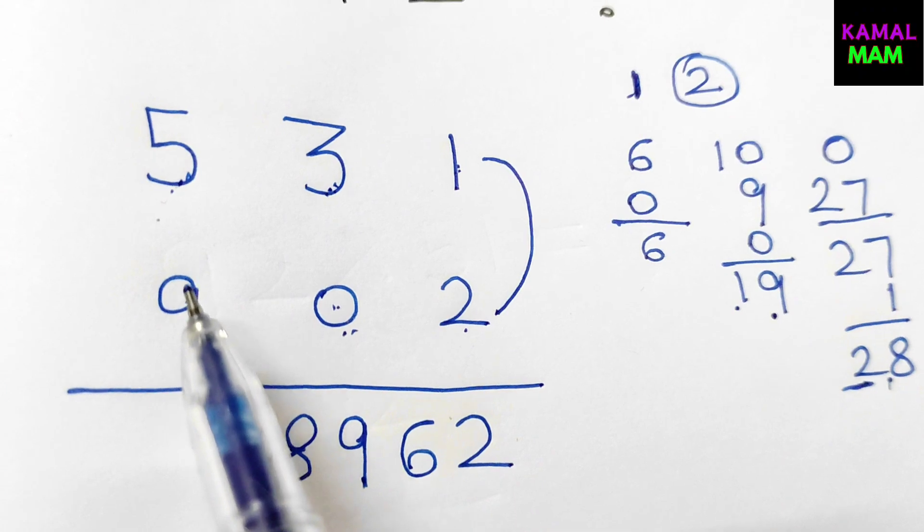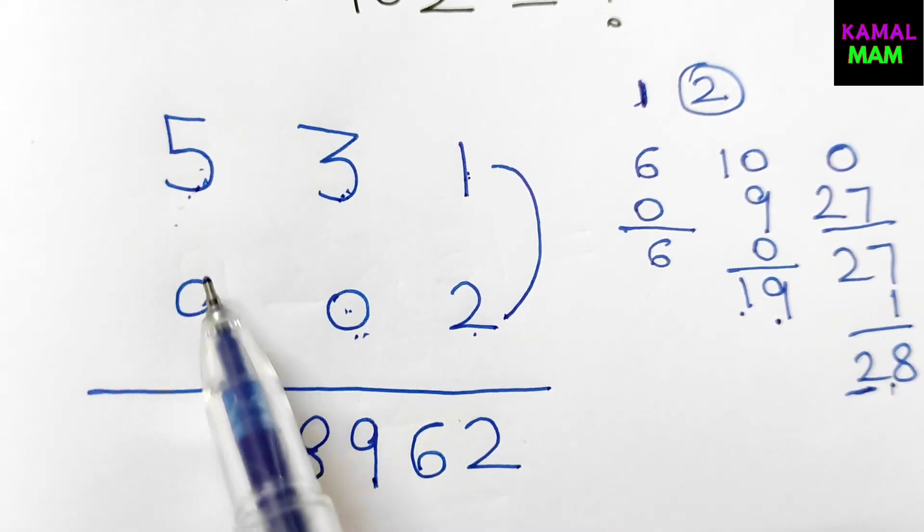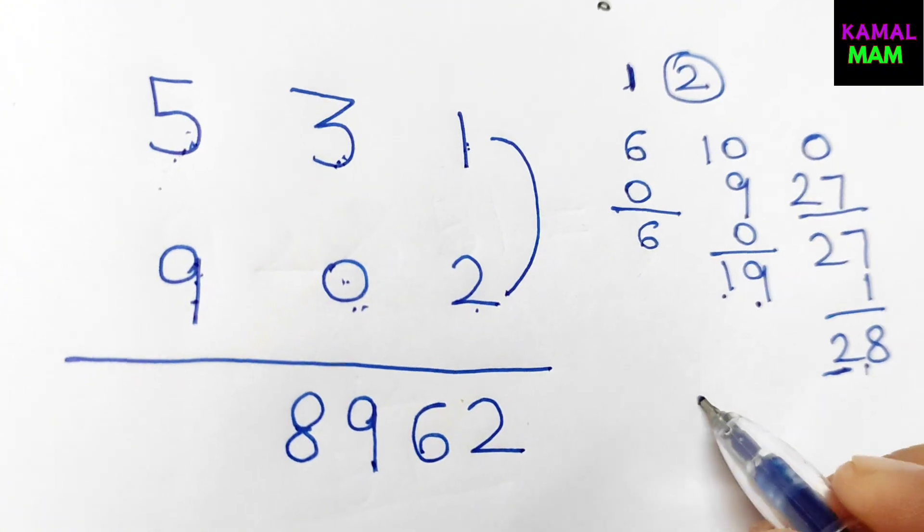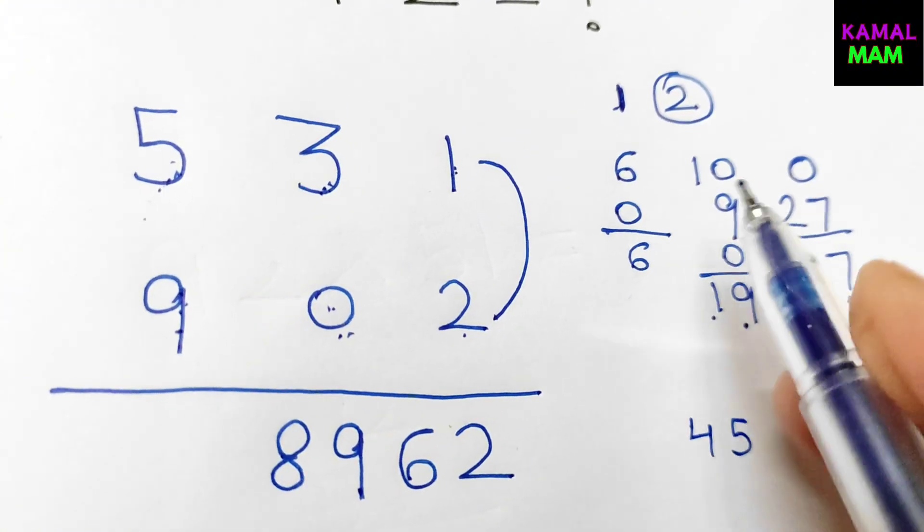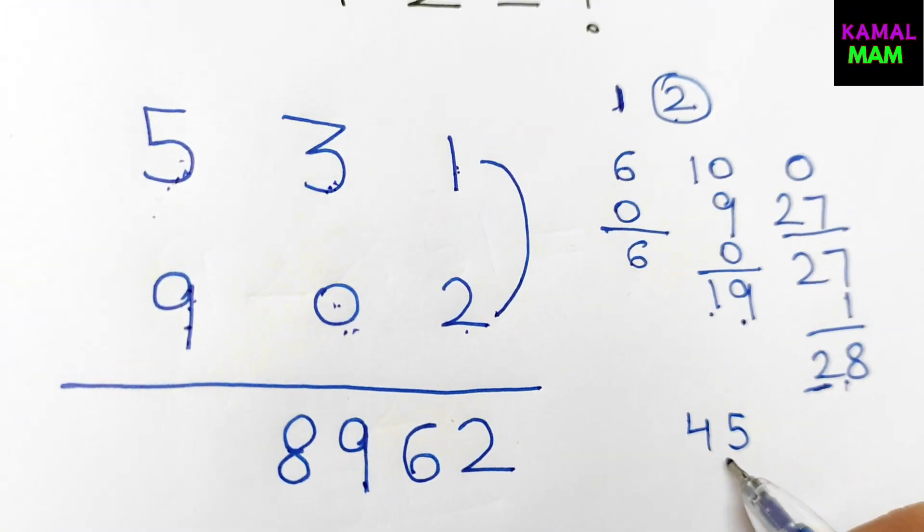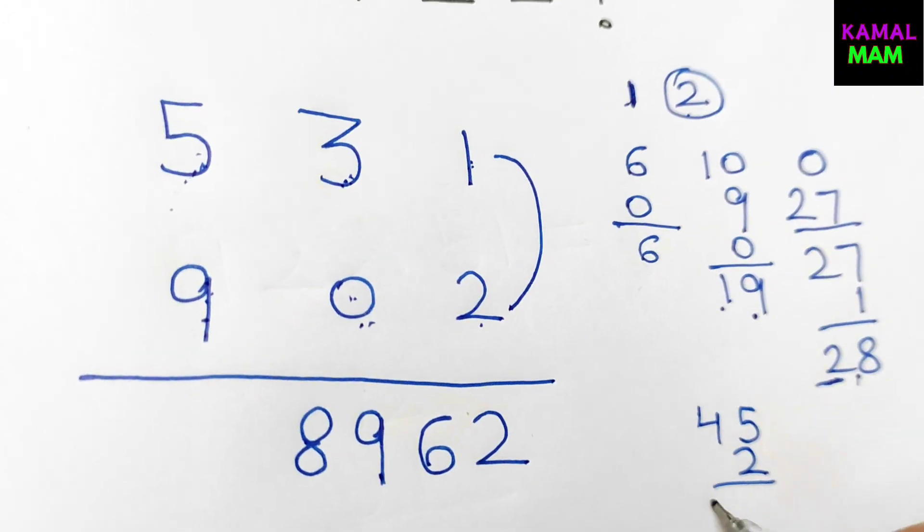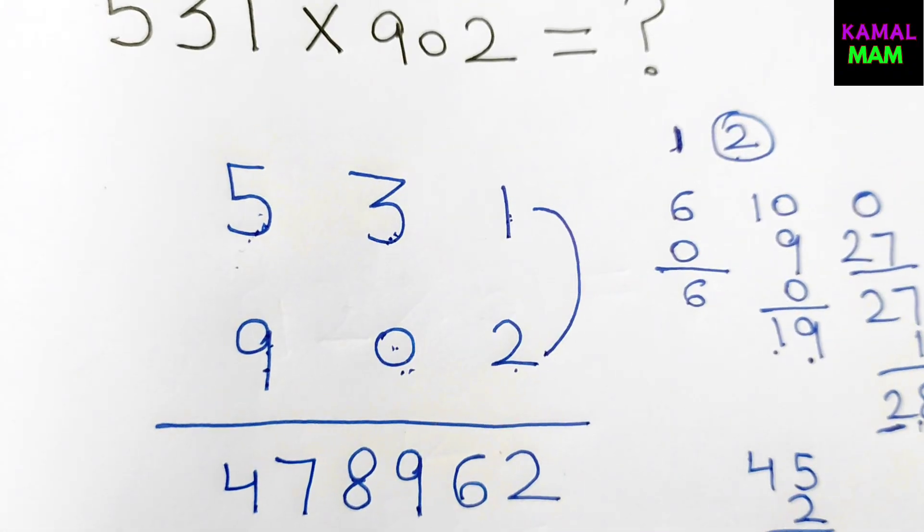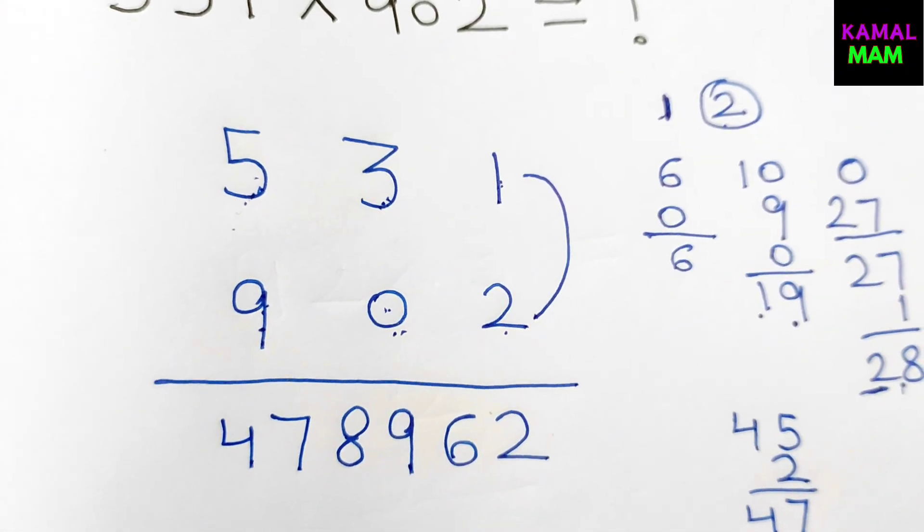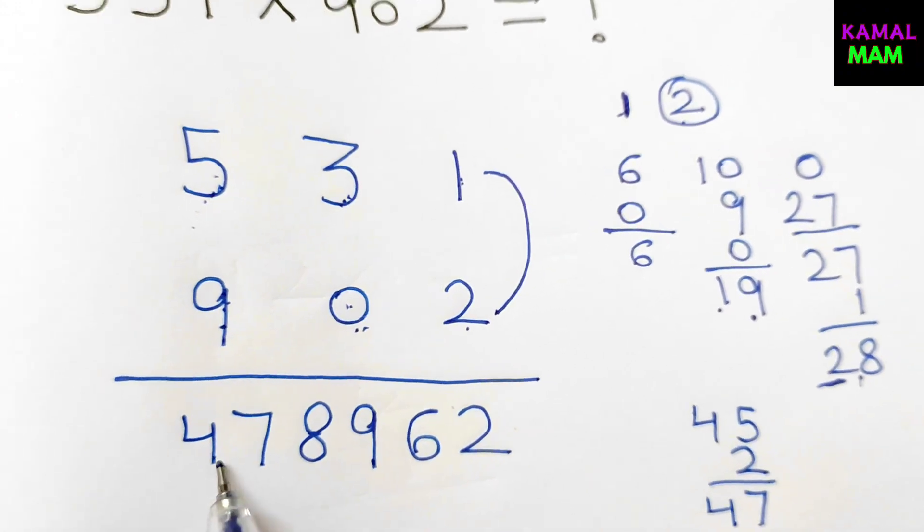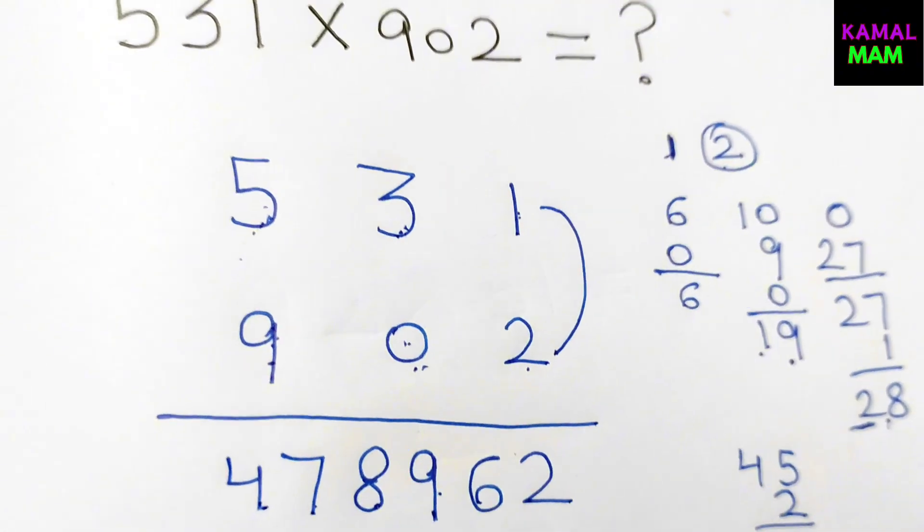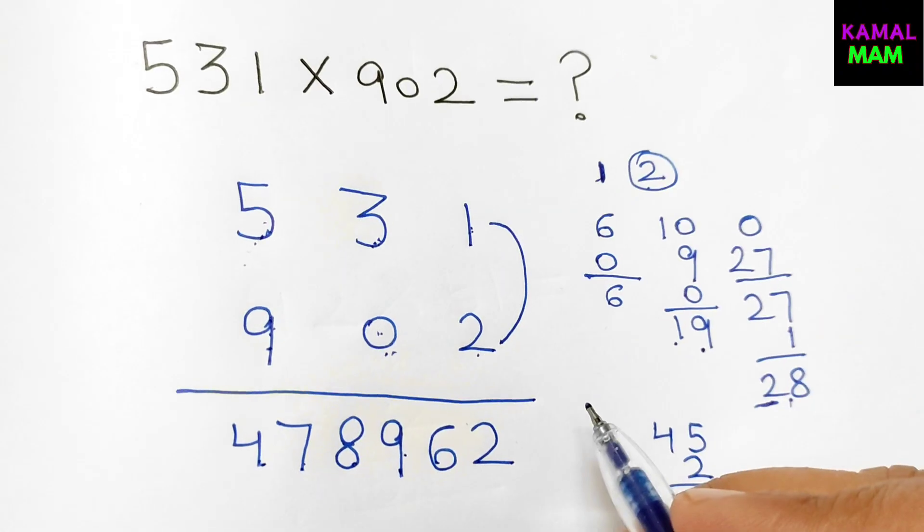In the last step, just multiply these 2 digits. 5 into 9 is 45. Then 45 plus this 2 which is in our hand, we get 47. So our final answer for 531 into 902 is 478,962. Thanks for watching.